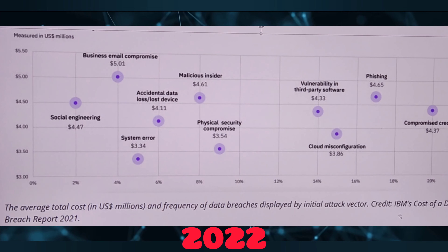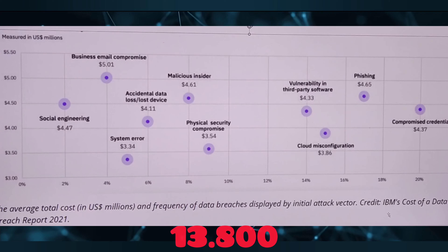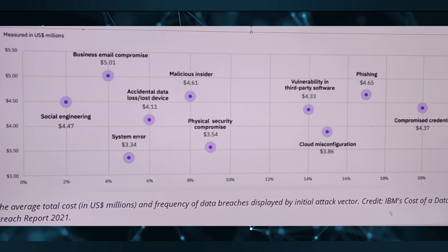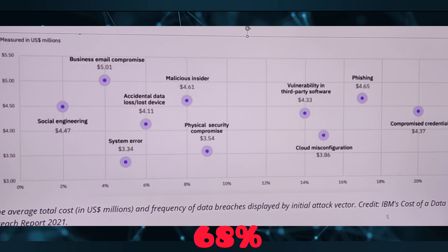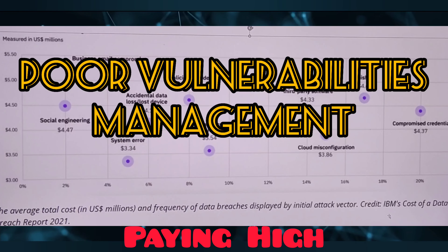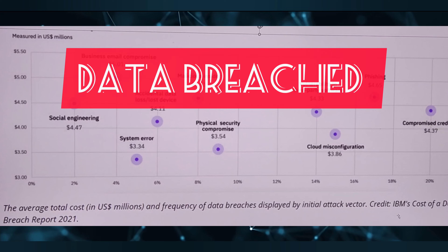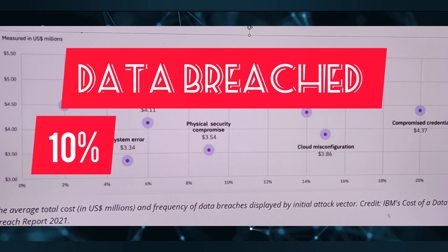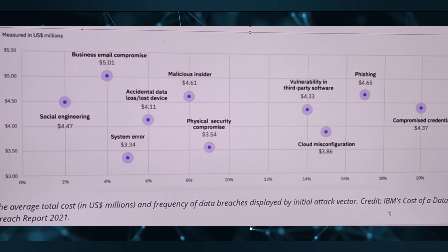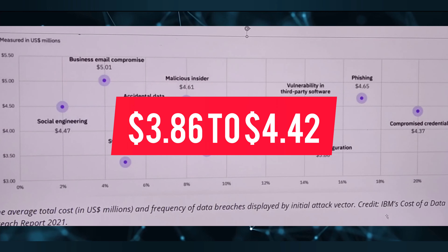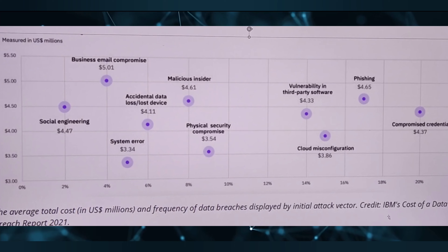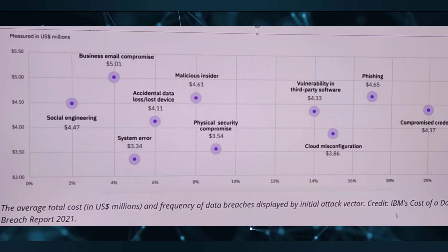2022 isn't looking any better — as of July, roughly 13,800 vulnerabilities had already been logged, averaging 68 per day. It's not surprising that organizations with poor vulnerability management are paying a high price. The average cost of a data breach rose nearly 10 percent between 2021 and 2022, from $3.86 million to $4.24 million US dollars.